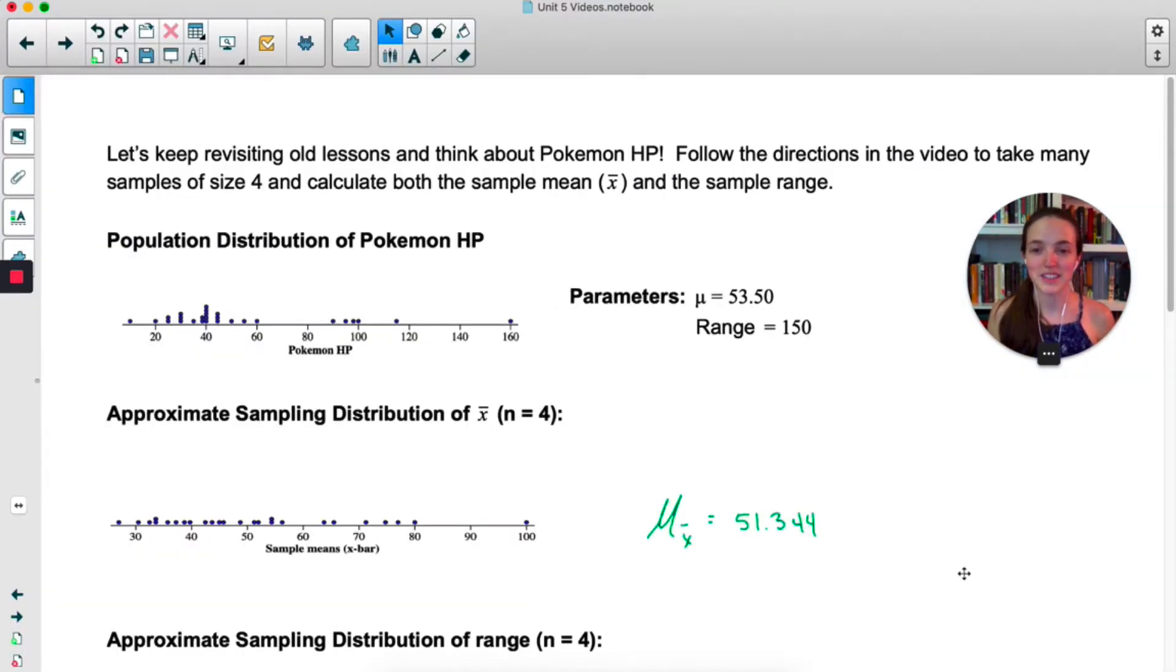At the time of filming, this is what my distribution of x-bars looks like. Now notice I'm calling this an approximate sampling distribution of x-bar, because it's not every single sample of size four, it's just some. So it's an approximate sampling distribution. The mean for my sampling distribution was 51.344.